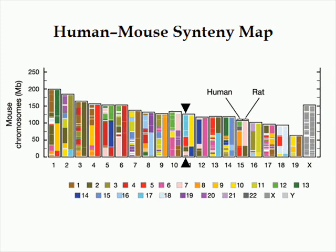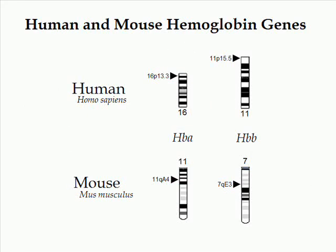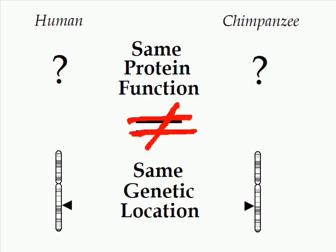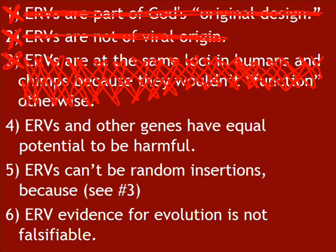Mouse chromosome 11 maps mainly to human chromosomes 17, 5, 2, 7, and 22. If even a protein as absolutely vital to life as hemoglobin can show such variation in the positions of its genes, certainly an ERV — even if it is functional — could do the same. So this example puts your third assumption soundly to bed, and since your fifth assertion is based on the third assertion being true, it also falsifies that one.